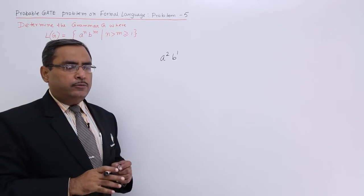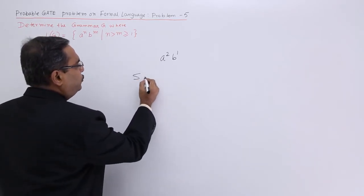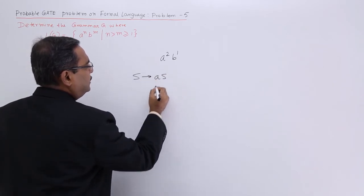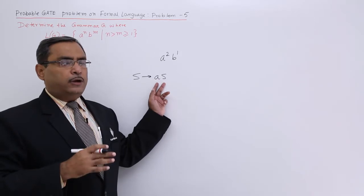Let me write the grammar now. Let me write the productions first. I shall go for S produces aS. Here you see if you go on applying this one, then a will be produced but no b will be produced.